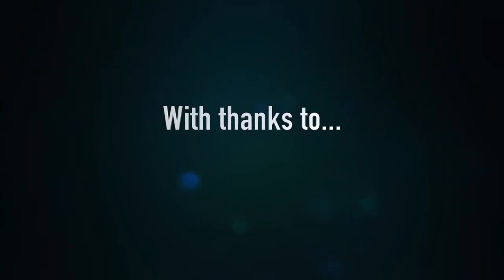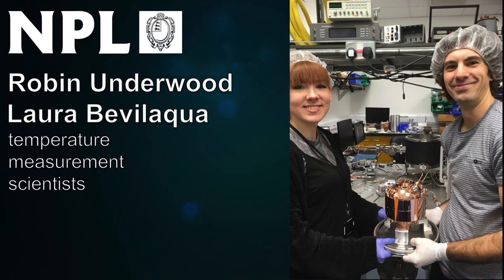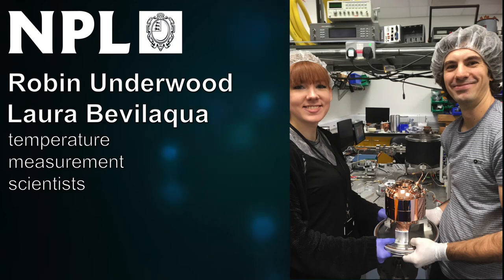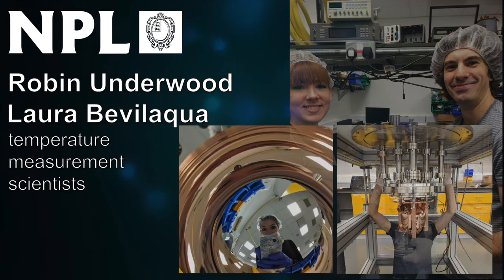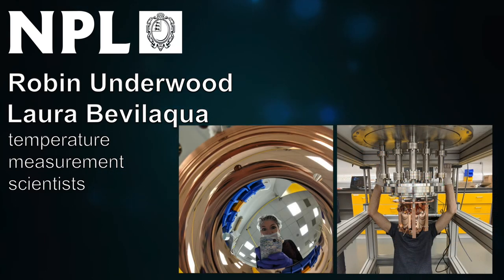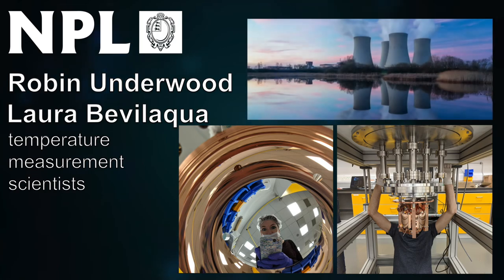This challenge was set by Robin and Laura, who use this method at NPL to measure temperature really accurately. Temperature? I thought this was all about sound waves and length. The speed of sound changes with temperature — that's why flutes go out of tune as they warm up. This method is used to measure temperature inside nuclear reactors, as the intense radiation would affect other types of thermometer.